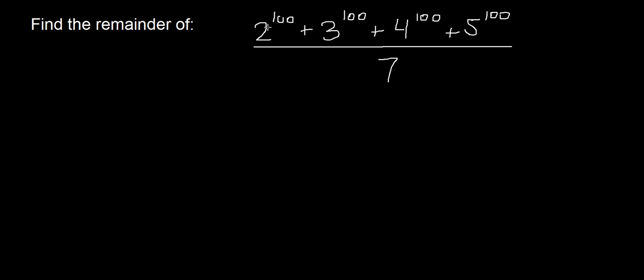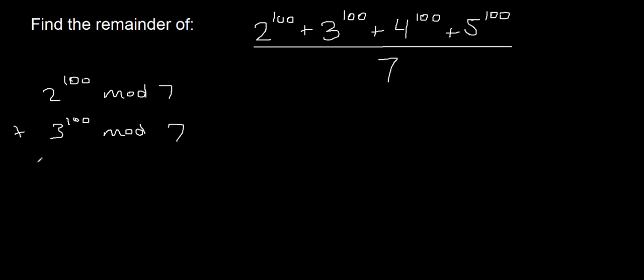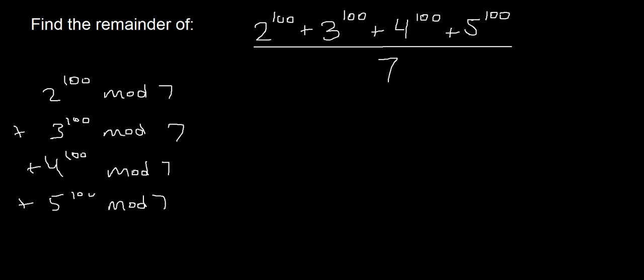So you can split this up into 2 to the power of 100 mod 7, plus 3 to the power of 100 mod 7, plus 4 to the power of 100 mod 7, plus 5 to the power of 100 mod 7. And that should give you the same answer as taking this entire thing mod 7. So let's tackle each one of these separately.